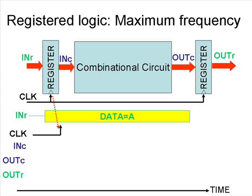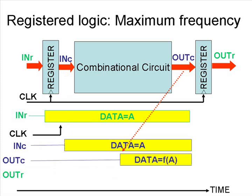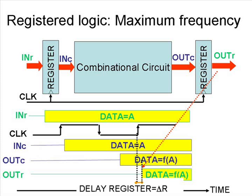When there is a rising edge at the clock signal, the data at the input of the combinational circuit is updated. The output of the combinational circuit is available after the delay. And after the next rising edge of the clock signal, the output of the register is updated with valid data.